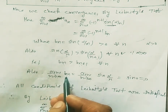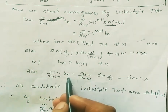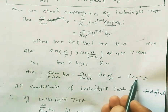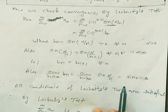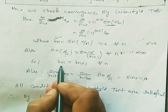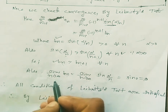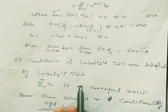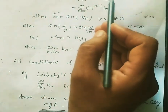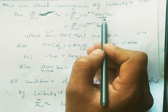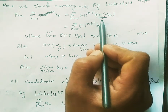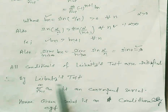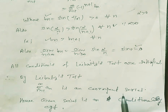Also, limit n→∞ of b_n = limit n→∞ of sin(α/n) = sin(α/∞) = sin(0) = 0. All three conditions of the Leibniz test are satisfied: b_n > 0, b_n > b_(n+1), and limit of b_n = 0. Therefore by the Leibniz test, summation of a_n is a convergent series. So the series is conditionally convergent.